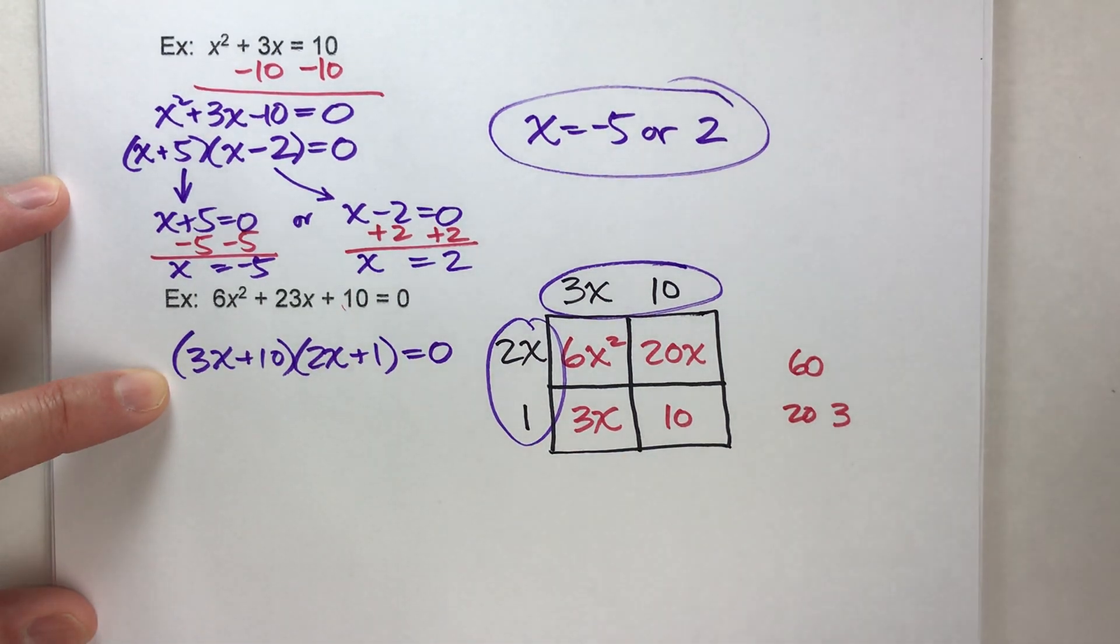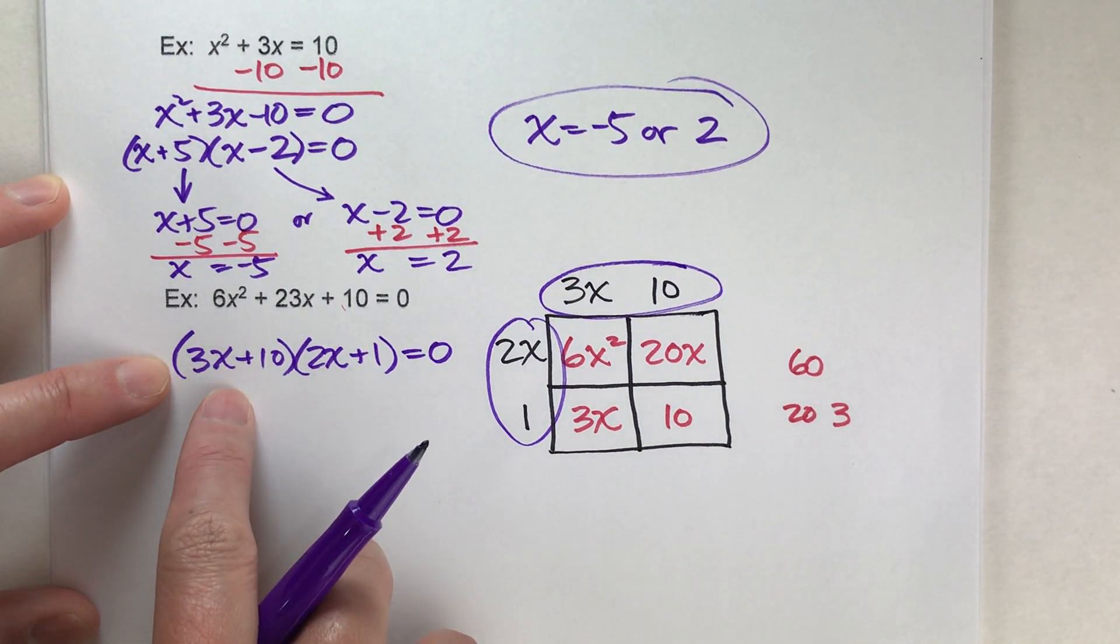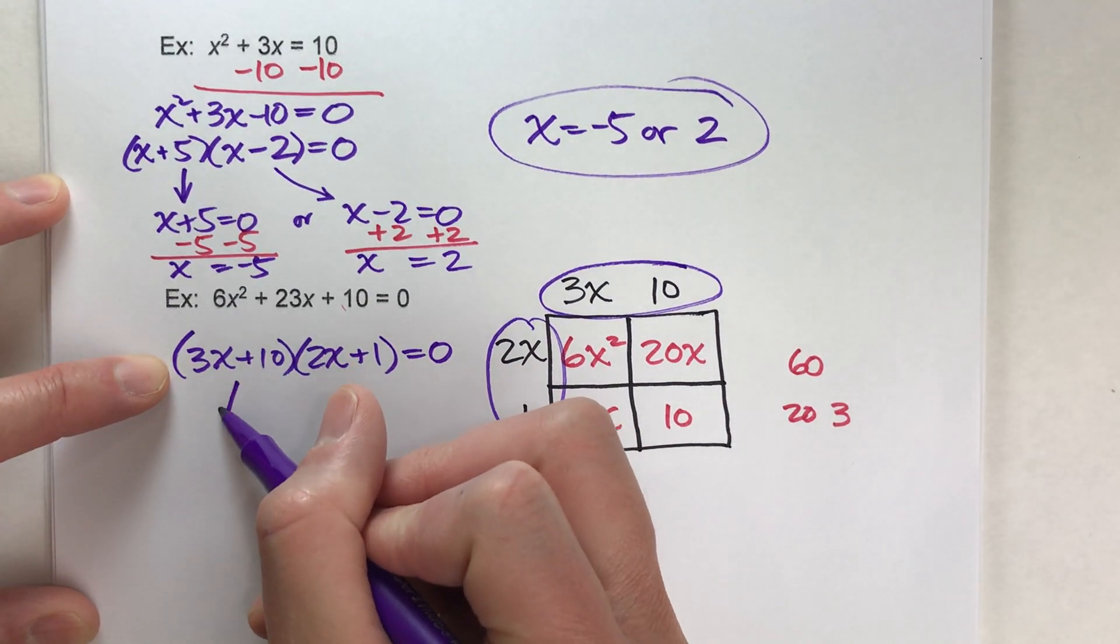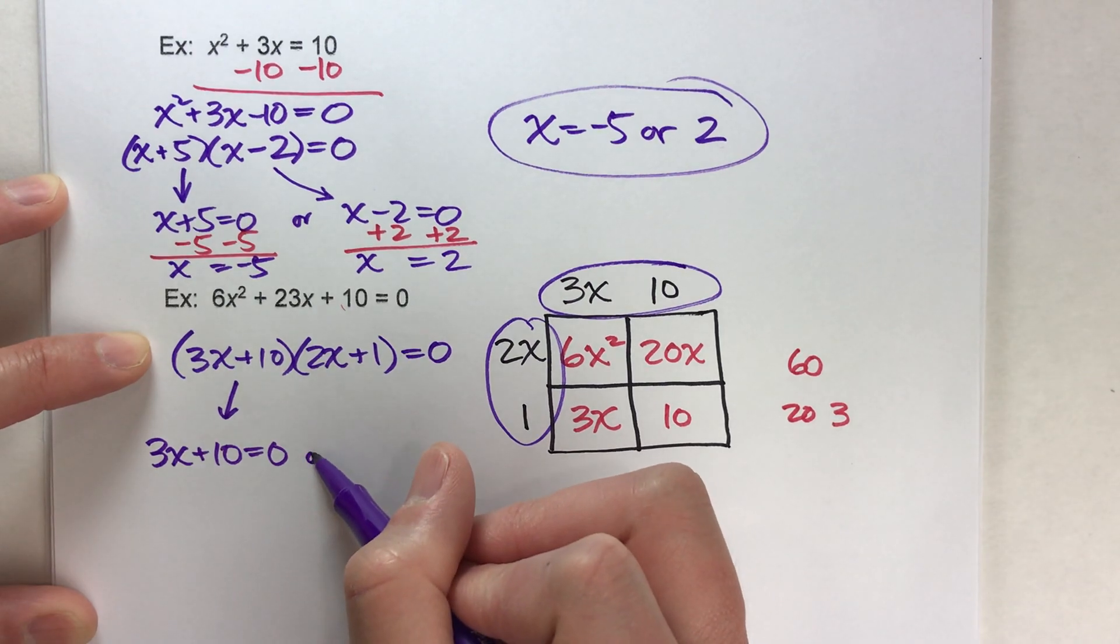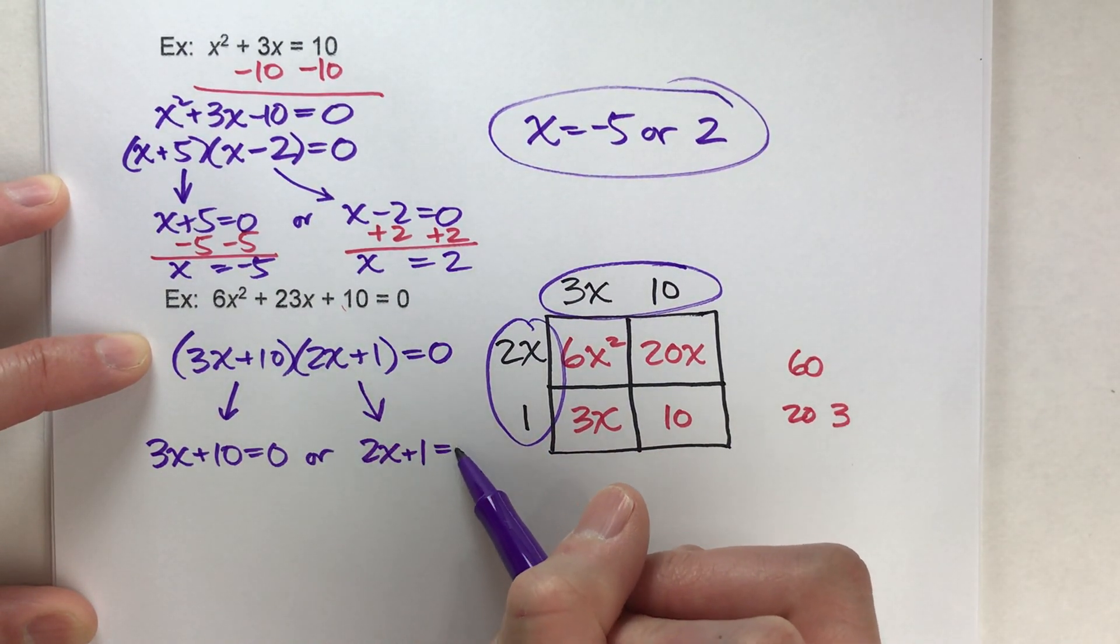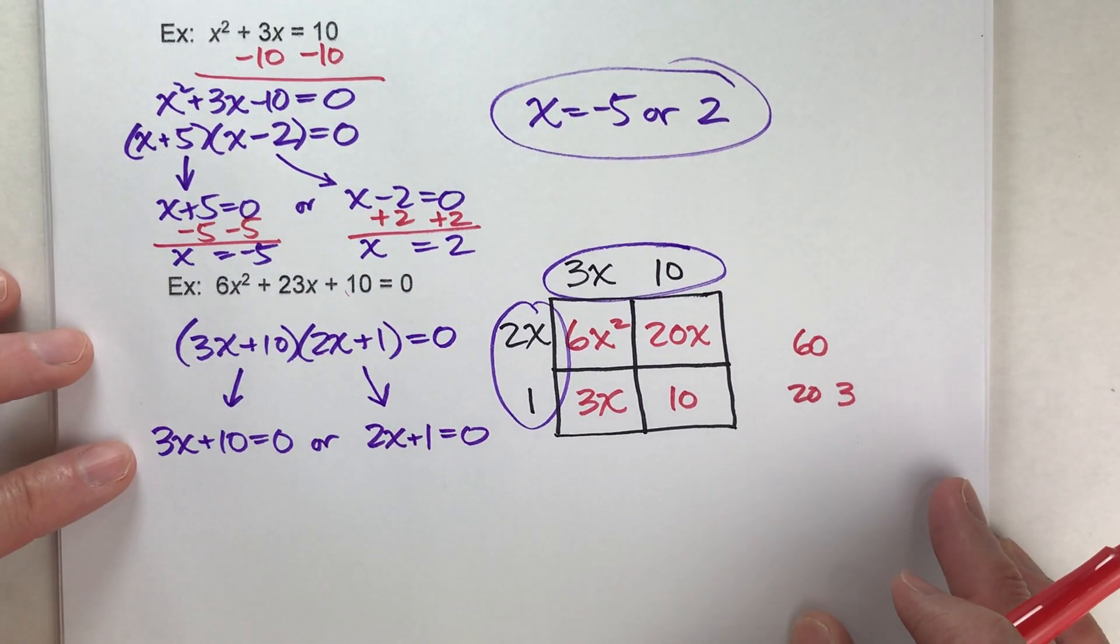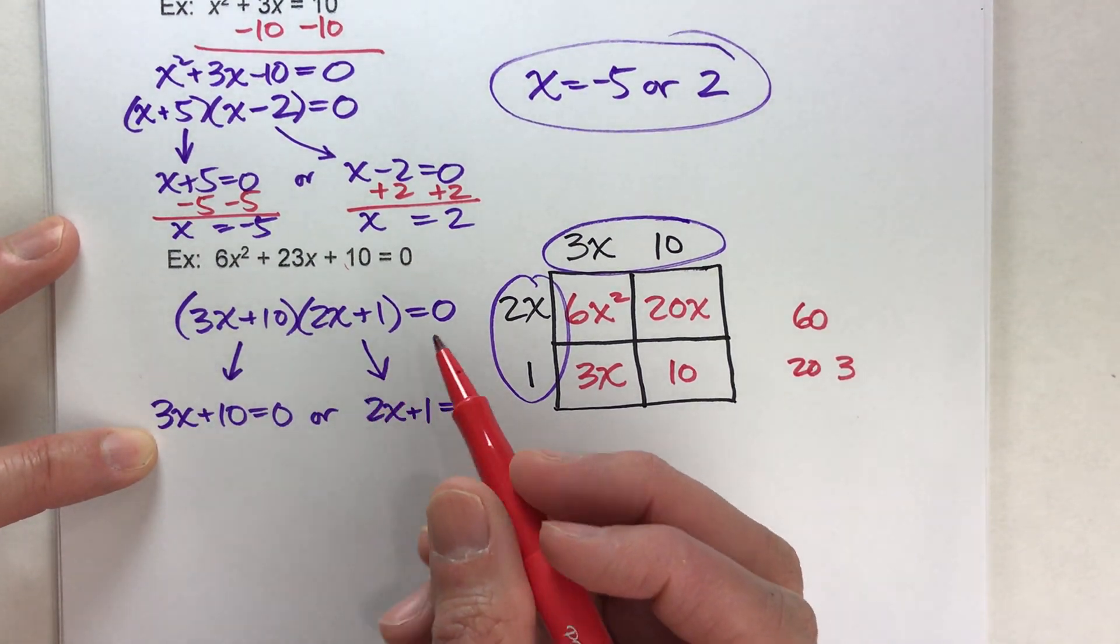Now let's do the rest of this. We know that because this times this equals 0, we know that either 3x plus 10 equals 0 or 2x plus 1 equals 0. To figure out what x must be, we just have to solve these two equations. And notice these are slightly harder equations.